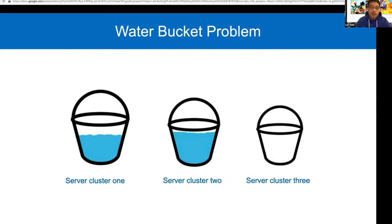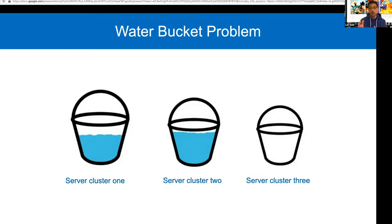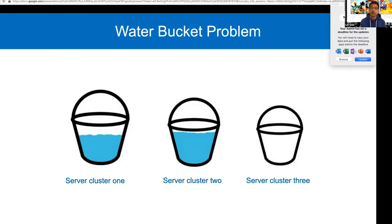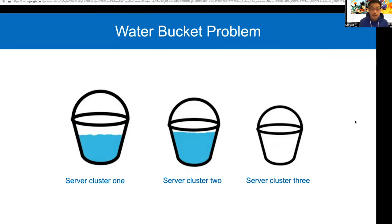Here is one example our team and the whole data analytics team is working on. We provide cloud services for customers of different sizes. For example, we have very large customers who need a lot of resources for their daily transactions, and we also have smaller customers who may share a single cluster. You can think of this as a classic optimization problem — like a water bucket problem — how to optimize the service and also reduce the cost.